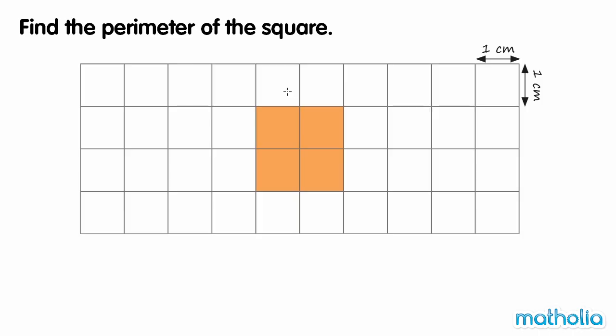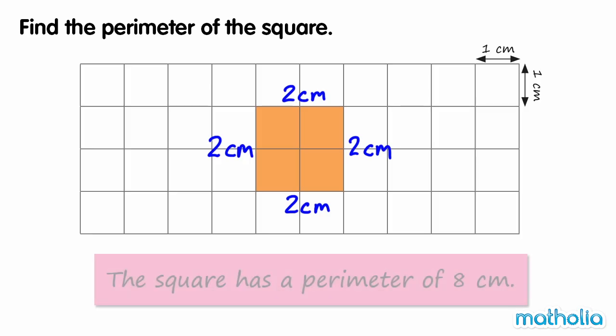The side lengths of this square are all 2 cm. 2 plus 2 plus 2 plus 2 equals 8. So the square has a perimeter of 8 cm.